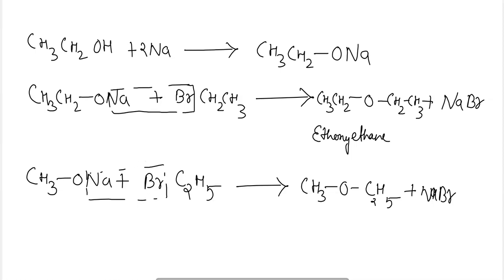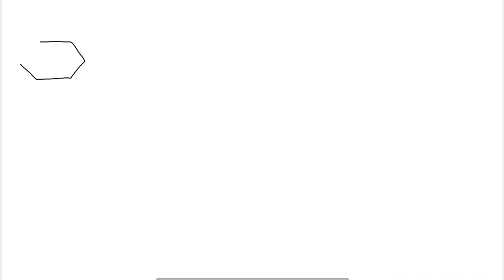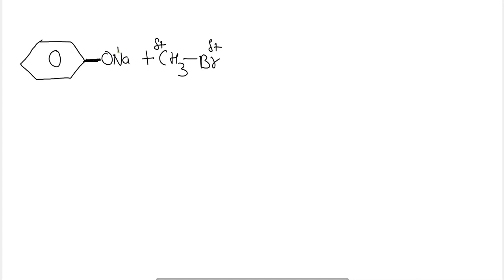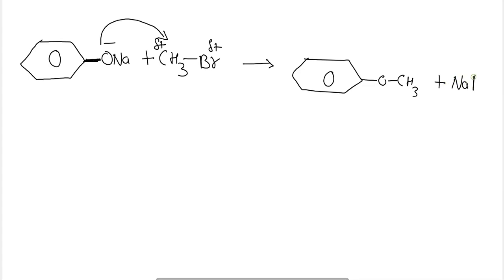By using Williamson synthesis we can prepare both symmetrical and unsymmetrical ethers. For example, reacting ethyl bromide with sodium methoxide gives methoxyethane. We can also prepare aromatic ethers: sodium phenoxide reacted with CH3Br gives anisole, with NaBr as byproduct.